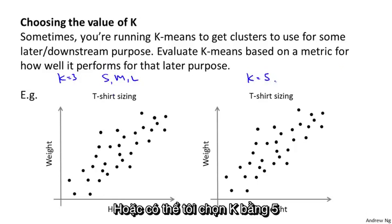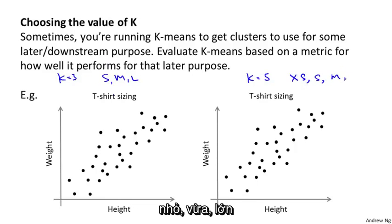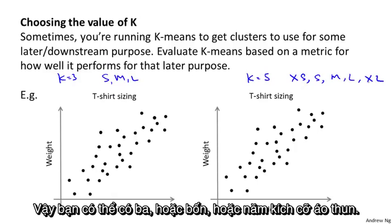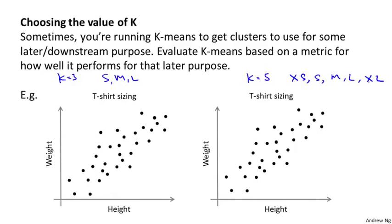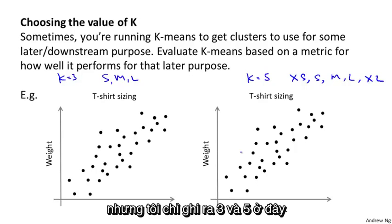Or maybe I want to choose k equals five, and then I might have extra small, medium, large, and extra large t-shirt sizes. So kind of like three t-shirt sizes or five t-shirt sizes. We could also have four t-shirt sizes. But I'm just showing three and five, just to simplify this slide for now.